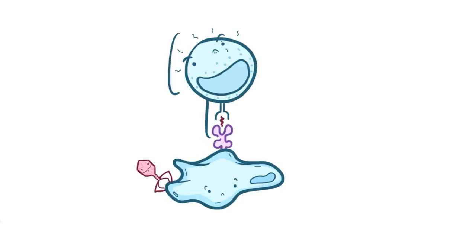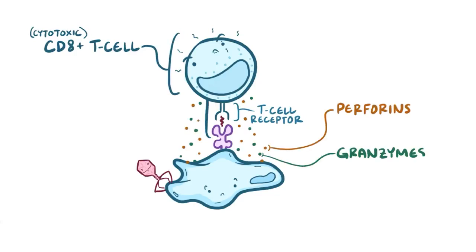A type of T lymphocyte called a CD8 positive T cell, also known as a cytotoxic T cell, uses its T cell receptors to bind to the antigen presented by the MHC class 1 molecule. If the cytotoxic T cell binds strongly, then the antigen is recognized as foreign, and the cytotoxic T cell secretes a whole lot of perforin and granzymes.